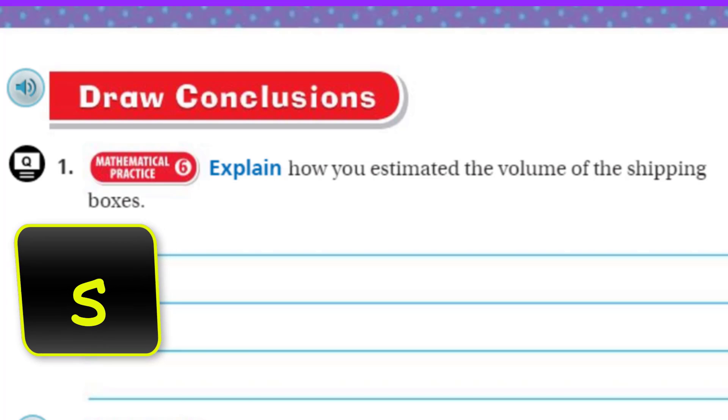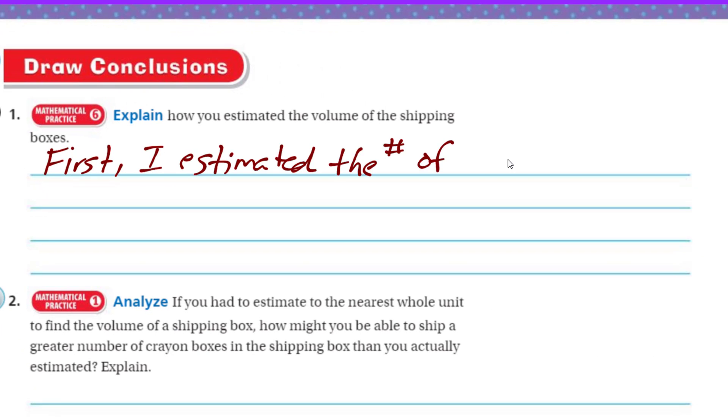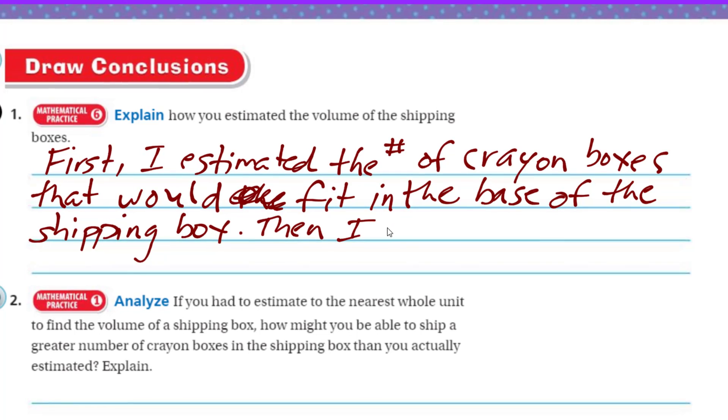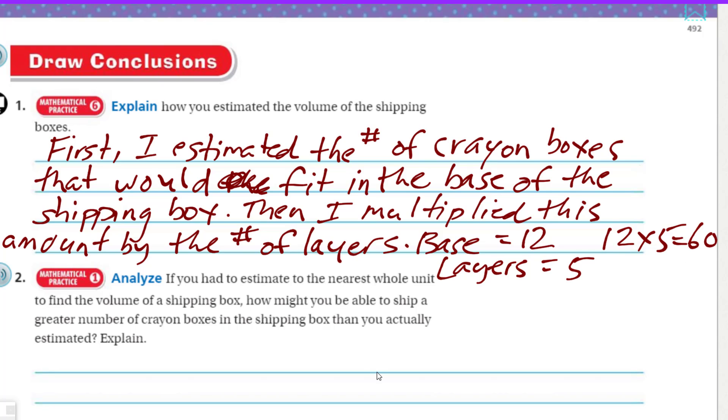Now we come over here, draw conclusions. Explain how you estimated the volume of the shipping boxes. You guys are going to be doing this hands-on. So probably what you should have done is you first started with a layer, right? The base layer. That's what I did. I was thinking the reason why I came up with the number 12, I was just thinking four by three. I was going to say that four crayon boxes in one direction and then three in the other direction. So first I estimated the number of crayon boxes that would fit in the base of the shipping box. Then I multiplied this amount by the number of layers. In my case, was 12 in the very first one. And then I said there was five layers. Layers is equal to five. So I took 12 times five, which equals 60. Crayon boxes. Again, totally estimated numbers just for this activity.